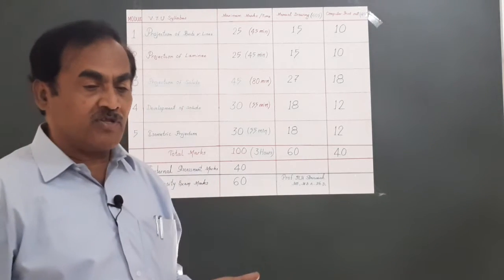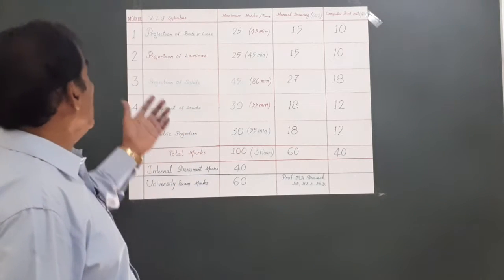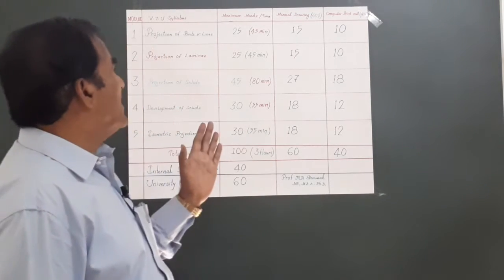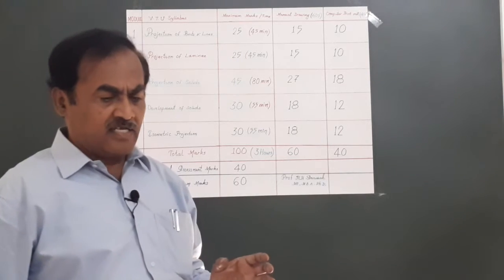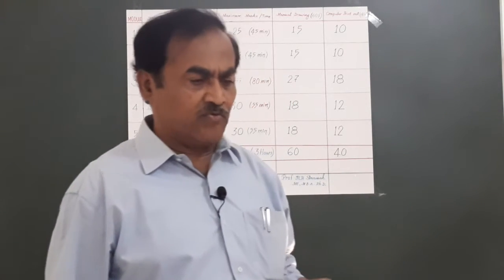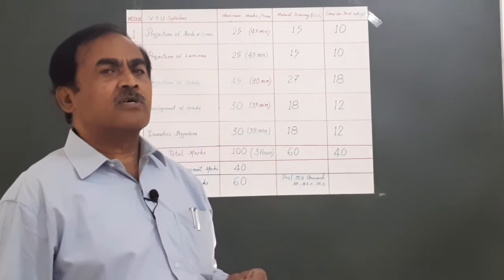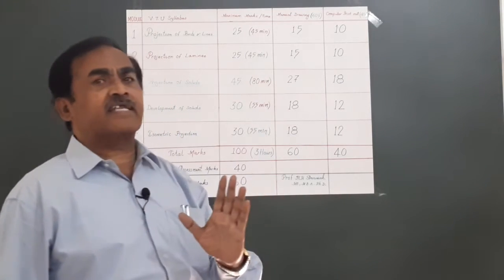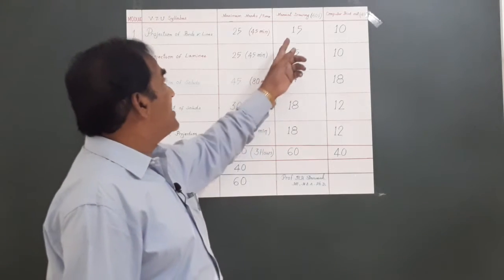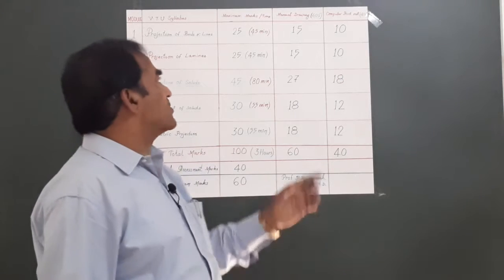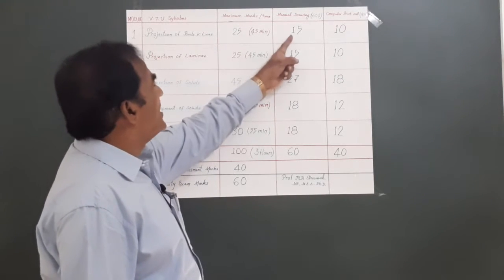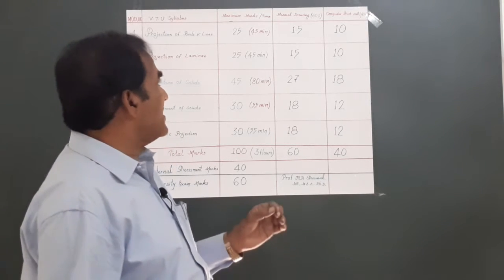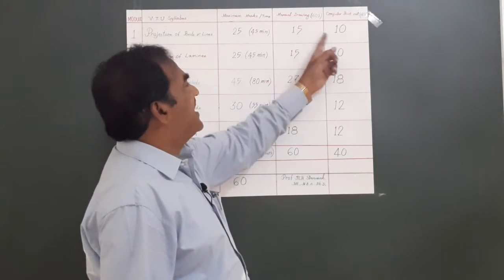In today's session I'm going to tell you what are the marks allocated for each module and how you should attempt them. Module one deals with the projection of points and lines, carrying 25 marks. In this particular paper in VTU you have to make both manual drawing and also compute that in the system and take the computer printout. Manual drawing always carries 60 percent of the total marks, whereas computer printout carries 40 marks. So out of these 25 marks, 15 marks are for manual drawing and 10 marks for computer printout.